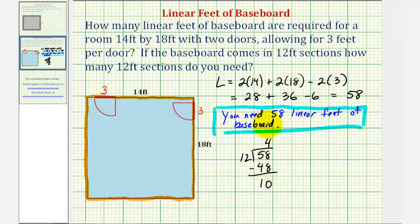This remainder of 10 means we need four 12-foot sections and then 10 more feet. But we can't just buy 10 feet. We have to buy another section. So we actually need five 12-foot sections.